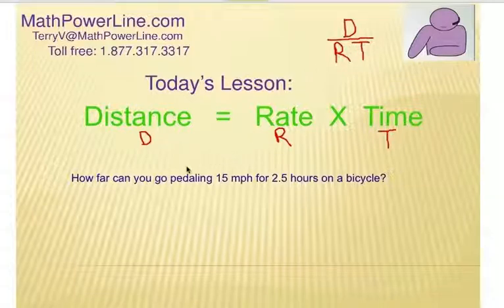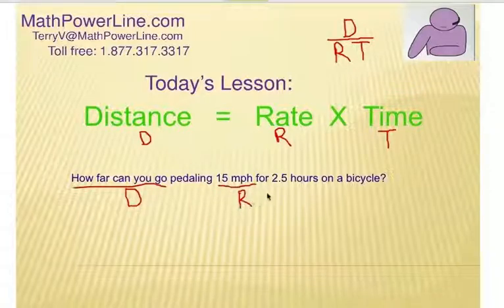All right, our first example: how far can you go pedaling 15 miles an hour for two and a half hours on a bicycle? Let's kind of label what we've got. How far can you go? Well, that's got to be distance, right? Pedaling 15 miles an hour, well, that's got to be your rate, the speed, for two and a half hours, and that's your time.